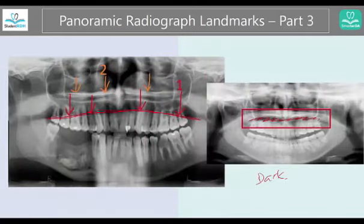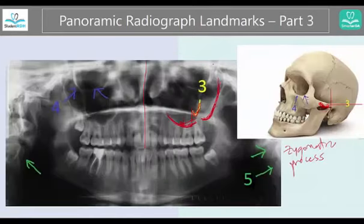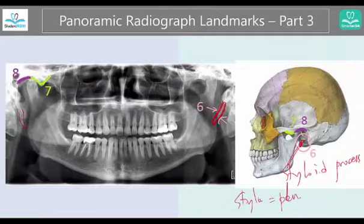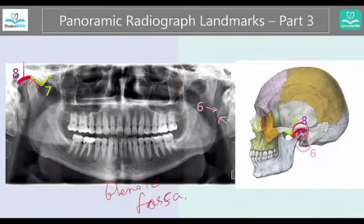Let me recap quickly. Number one: the dark area — the border of the tongue. Number two: the hard palate, which looks radiopaque. Number three: the U-shaped radiopaque area called the zygomatic process. Number four: the bottom of the orbits. Number five: the spine. Number six: the pointy area called the styloid process. Number seven: the little bump called the articular eminence. Number eight: the area that fits with the condyle, called the glenoid fossa. I hope this all makes sense. We've reviewed parts one, two, and three. If you haven't watched them, just go back — it takes five minutes and you will know everything about panoramic radiograph landmarks. Thank you.